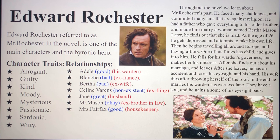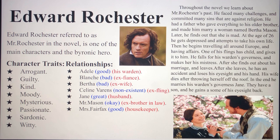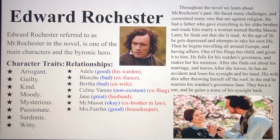Throughout the novel we learn about Mr. Rochester's past. He had a father who gave everything to his older brother and made him marry a woman named Bertha Mason. He later finds out she was mad. At the age of 26 he gets depressed and attempts to take his own life. He then travels around Europe having affairs. One of his flings has a child and gives it to him. He falls for his ward's governess and makes her his mistress. After she finds out about his marriage and leaves, he has an accident and loses his eyesight and his hand. His wife dies after throwing herself off the roof. In the end he marries Jane, they have a son, and he regains some of his eyesight.